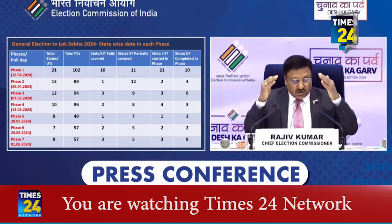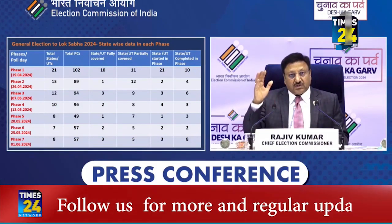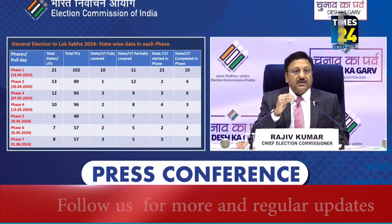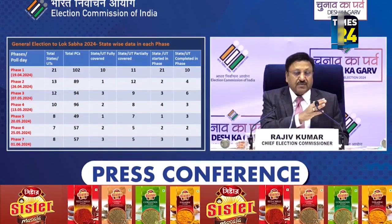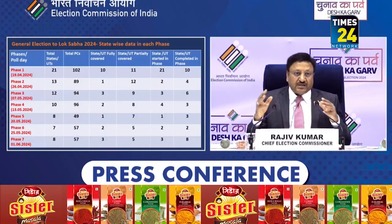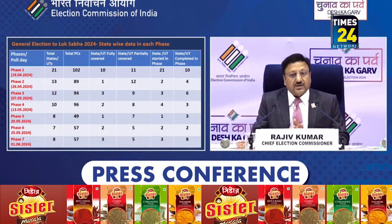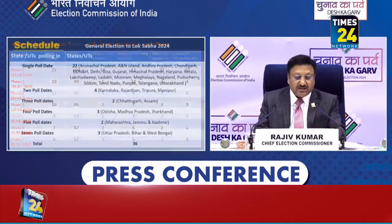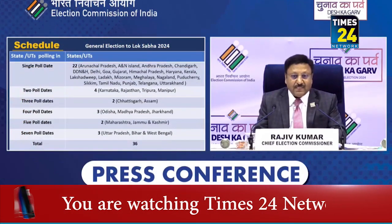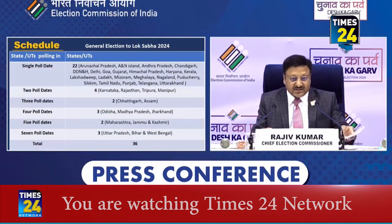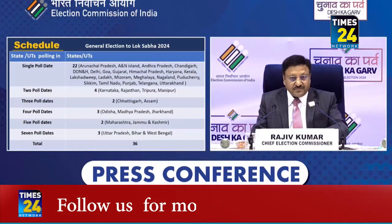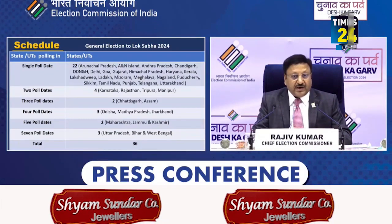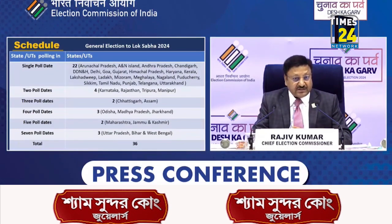We'll slowly come down and finish northeast, move up from the south and finish the western area. Considering weather and all other factors, after a lot of deliberation, this schedule has been prepared. With this, single phase single poll date will be in 22 states.